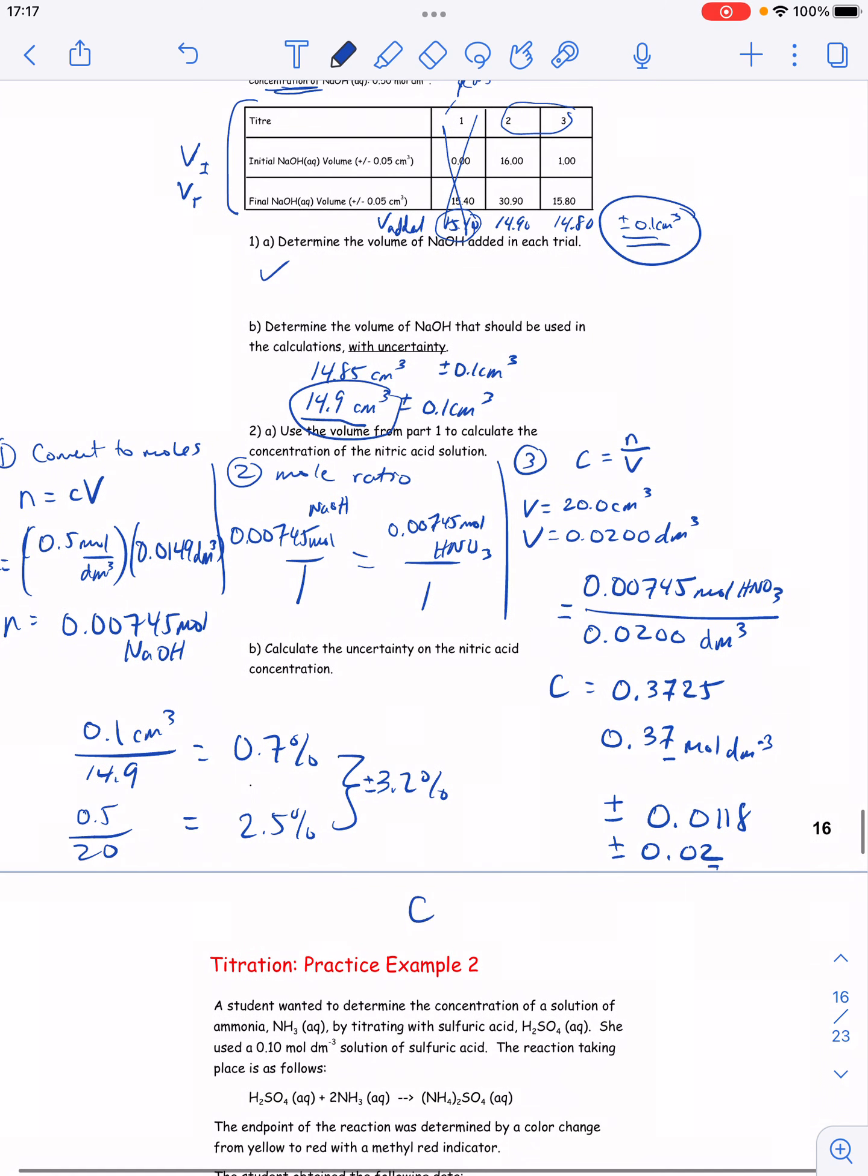So final answer with uncertainty is that the concentration of the nitric acid is 0.37 plus or minus 0.02 moles per dm cubed.